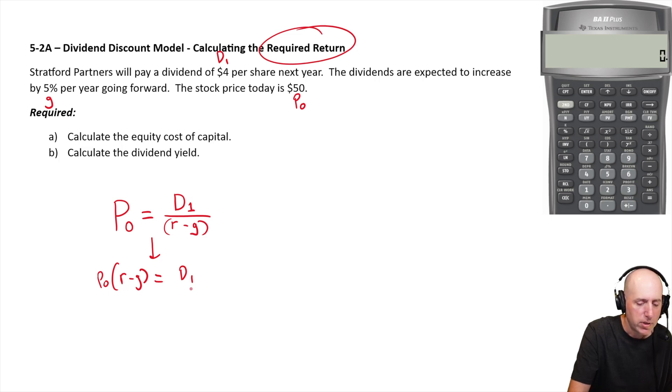I'm going to divide both sides by P zero. I'm trying to isolate the R. I'm going to divide both sides by P zero. So I get R minus G equals D one over P zero. And again, I'm isolating the R. So I just add G to both sides. So I get R equals D one over P zero plus G. Welcome to finance.